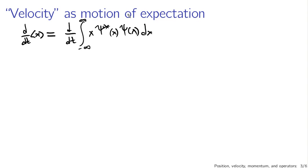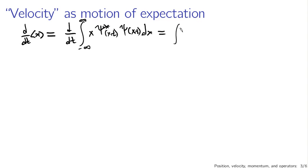We're going to apply the Schrödinger equation. The first thing we do is move this total time derivative inside the integral — it becomes a partial derivative. Since x is just the spatial coordinate, the total time derivative does not affect x even when it becomes a partial derivative. So what we end up with is x times the partial time derivative of psi star psi, integrated dx.